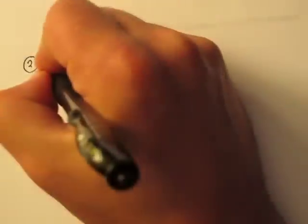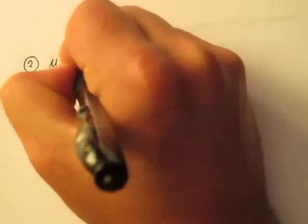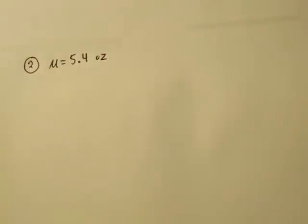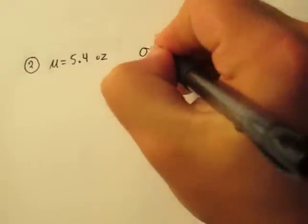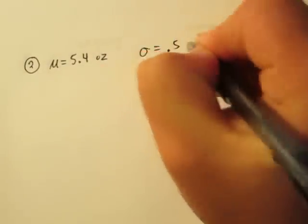In problem 2, we're told the mean weight of an apple in a grove is 5.4 ounces, and we're also told that the standard deviation is 0.5 ounces.